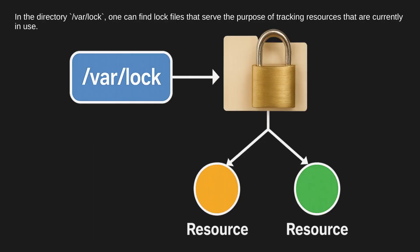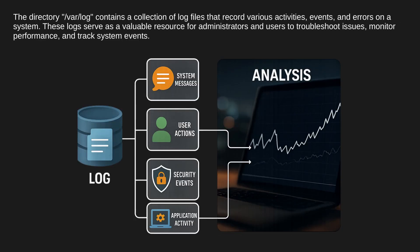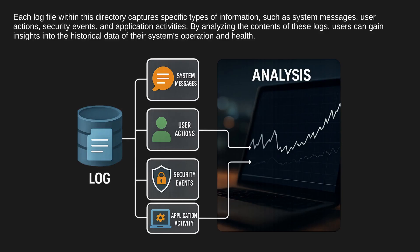In the directory /var/lock, one can find lock files that serve the purpose of tracking resources that are currently in use. The directory /var/log contains a collection of log files that record various activities, events, and errors on a system. These logs serve as a valuable resource for administrators and users to troubleshoot issues, monitor performance, and track system events. Each log file within this directory captures specific types of information, such as system messages, user actions, security events, and application activities. By analyzing the contents of these logs, users can gain insights into the historical data of their system's operation and health.